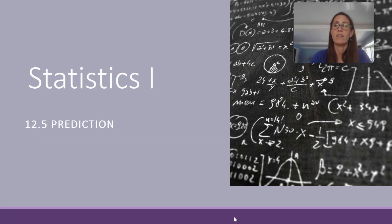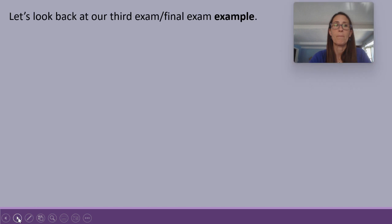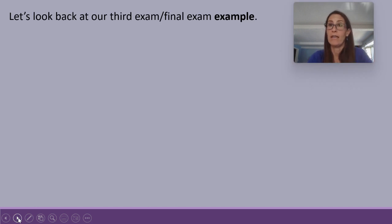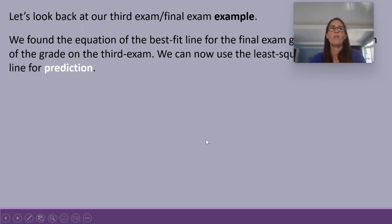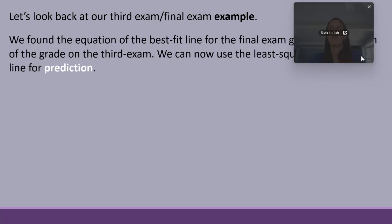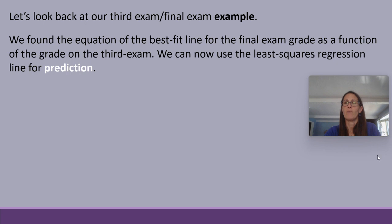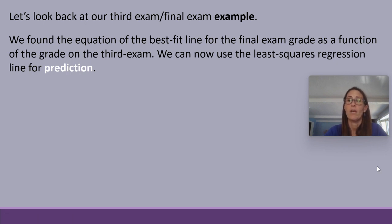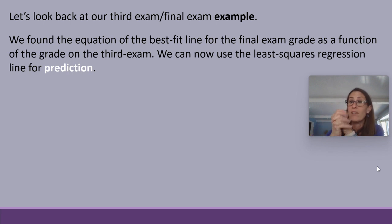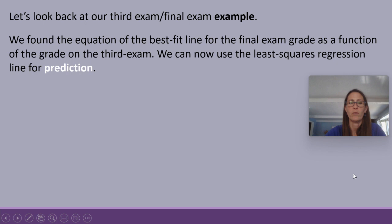This video is going to cover section 12.5 on prediction. We're going to look back at our third exam, final exam example. We found the equation of the line of best fit for the final exam grade as a function of the grade on the third exam. Now we can use that least squares regression line for prediction — that's what Excel does when they do the trend line, the least squares regression.